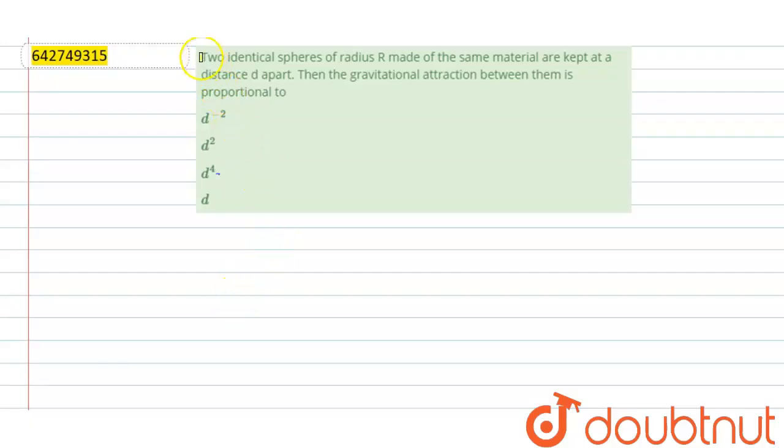Question is: two identical spheres of radius R made of the same material are kept at d distance apart. Then the gravitational attraction between them is proportional to what?